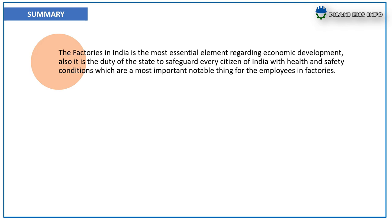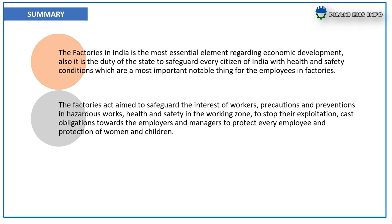In summary, factories in India are the most essential element of economic development, and it is the duty of the state to safeguard every citizen of India with regard to health and safety conditions. The Factories Act aims to safeguard the interests of workers through precautions and preventions in hazardous work, health and safety in the working zone, stopping exploitation, casting obligations on employers and managers to protect every employee, and protection of women and children. This act covers 120 sections, 11 chapters and 3 schedules.